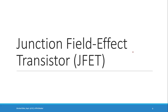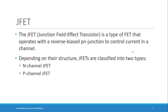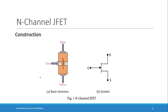In JFET there is a PN junction — that's why it's called a Junction Field Effect Transistor. It is a FET that operates with a reverse-biased PN junction to control the current in a channel. Depending on the structure, JFETs are classified into two types: N-channel JFET and P-channel JFET. The channel is a path for the flow of charges. If the channel is of N-type material it is N-channel JFET; if P-type, it is P-channel JFET.